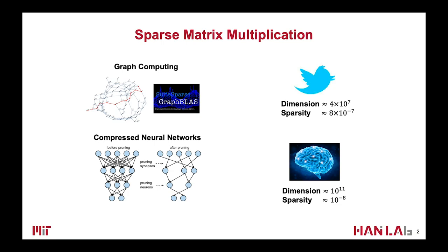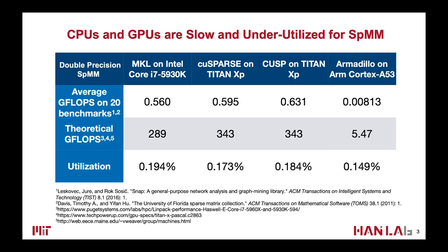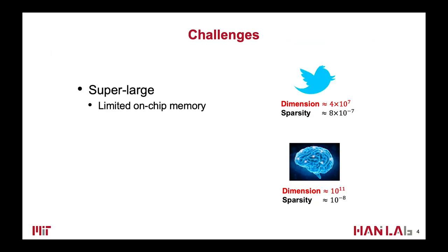As we know, sparse matrix multiplication is an important operation in many applications, such as the GraphBLAS library for graph computing and the inference and training of compressed neural networks. However, the traditional general-purpose platforms are not good at sparse operations. We found that on Intel CPU, ARM CPU, and NVIDIA GPU, the hardware utilization when doing double-precision sparse matrix multiplication is under 1%. That well motivates us to build specialized hardware for this important operation.